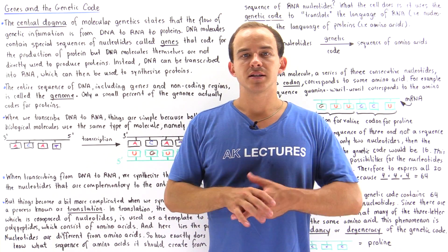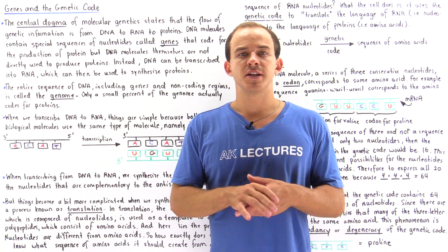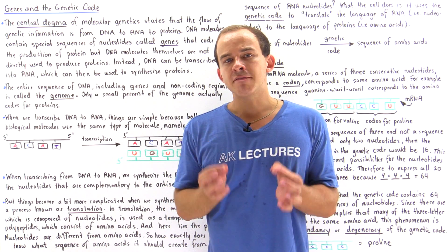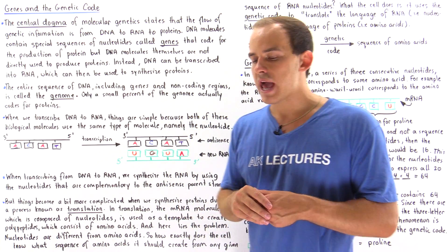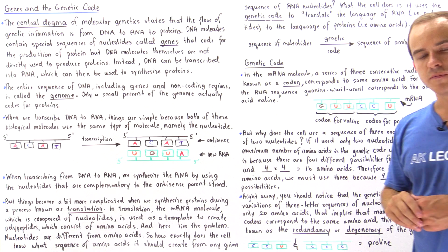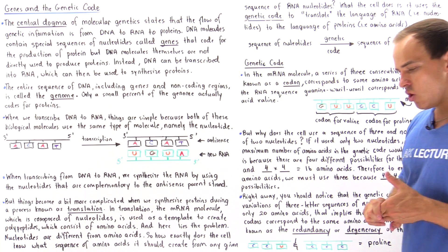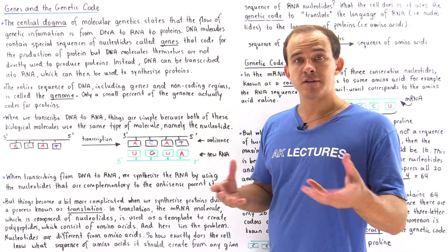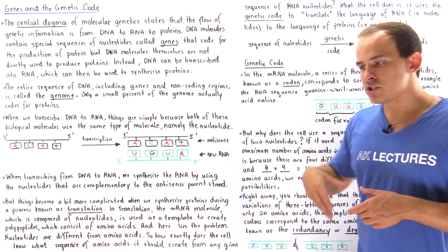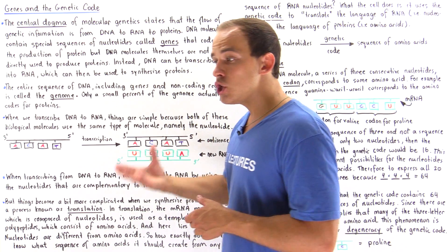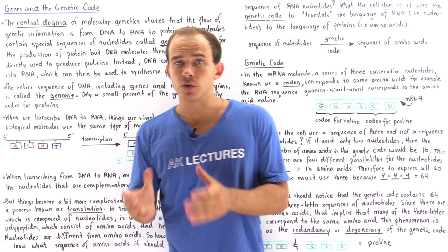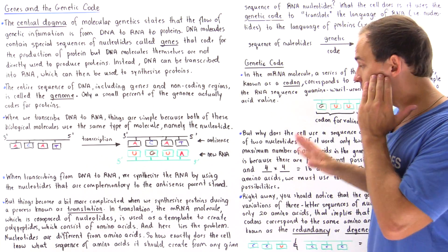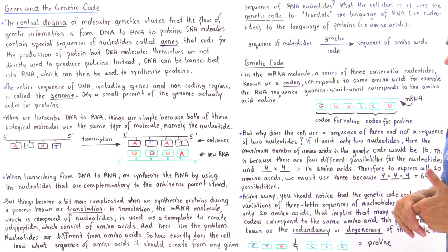Before we discuss the process of translation, in which we synthesize our proteins from RNA molecules, we have to discuss a concept known as the genetic code. The genetic code is basically a system used by the cells, specifically by the ribosomes, to translate the language used by the RNA molecules into the language used by our proteins, as we'll see in just a moment.